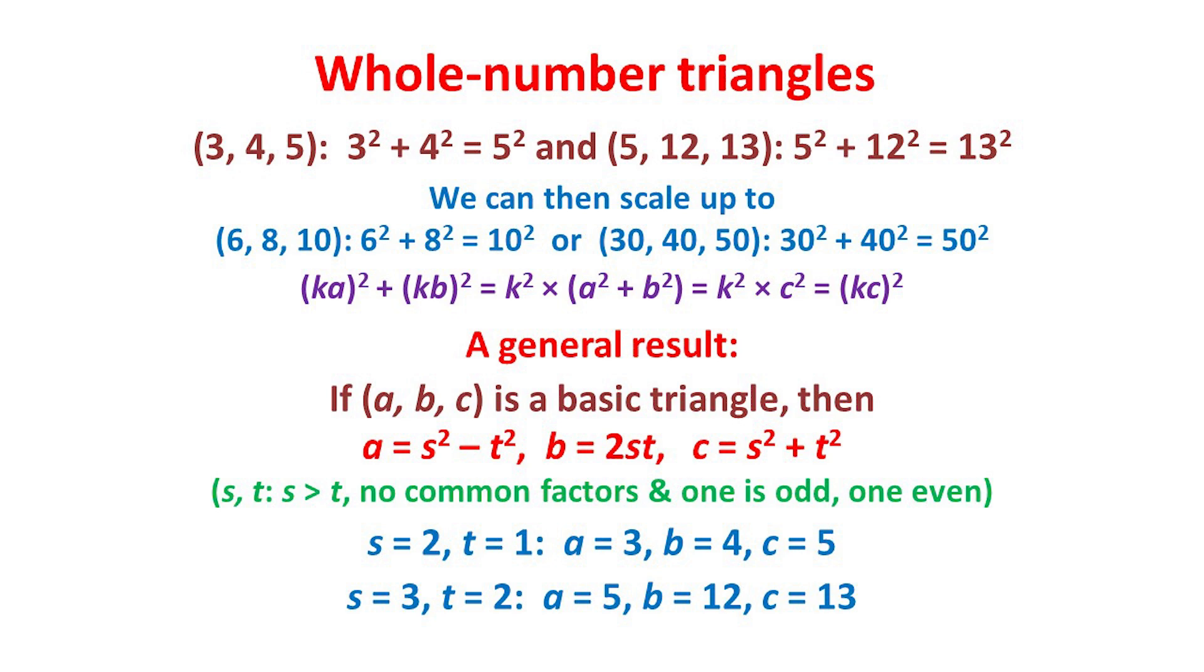And similarly, if we take s to be 3 and t to be 2, then we get the 5, 12, 13 right-angled triangle.